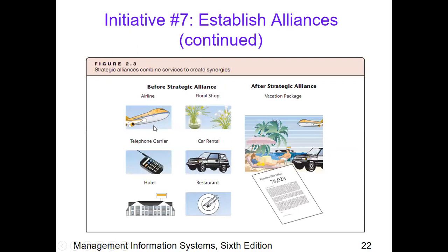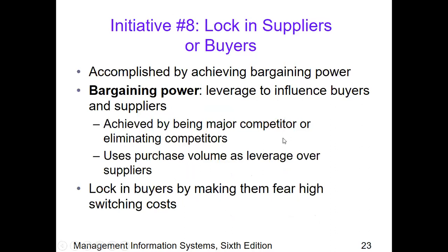Here is an example of establishing alliances. Before the strategic alliance, if we want to go on vacation, we would do these transactions separately: airline reservation, the floral shop, telephone carrier, car rental, hotel, and restaurant. With a strategic alliance, these form part of a vacation package at a lower cost. The point of competitive advantages is combining different companies into one alliance to reduce costs.